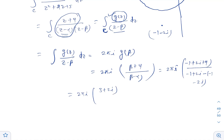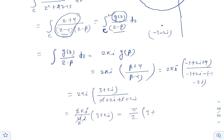Simplifying: the numerator is 3 plus 2i and the denominator becomes minus 1 plus 2i plus 1 plus 2i, which equals 4i. So we have 2 pi i times (3 plus 2i)/(4i). The i cancels and 2 divides into 4, giving the final answer: pi over 2 times (3 plus 2i).